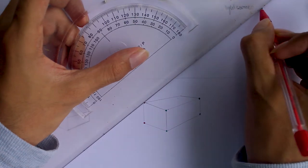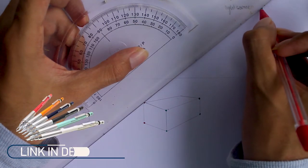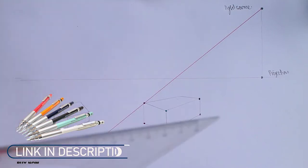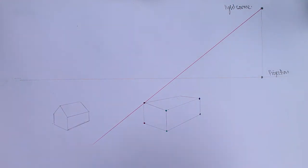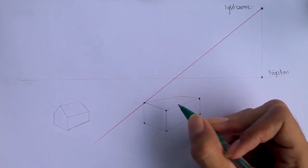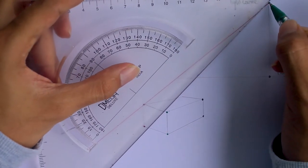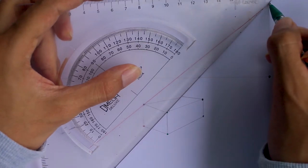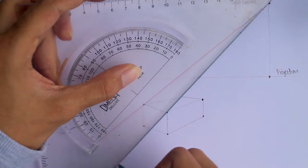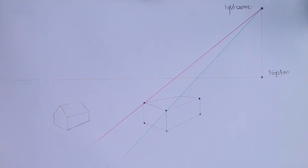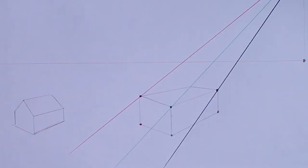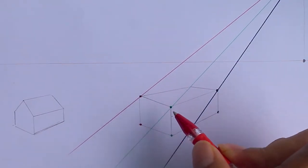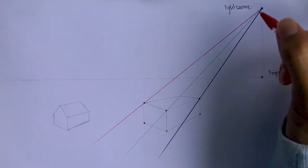Now comes the main step: place the pen on the light source and draw a line from the light source passing through each point on the object. Here we draw a projection line from the light source to the red point on the object. Then with the green pen, follow the same procedure — mark a line from the light source to the green point — and do the same for the third line. With the help of these lines, you can now clearly see where the shadow of the object will appear.